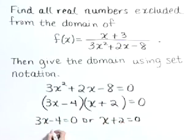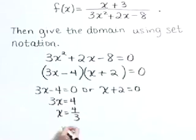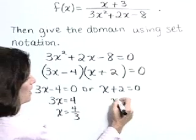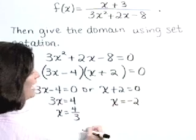Solve each linear piece. 3x is equal to 4, or x is equal to 4 thirds, or x is equal to negative 2.